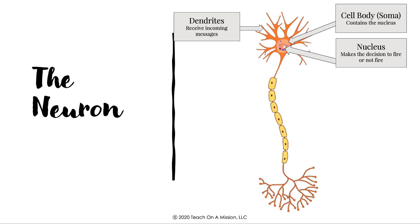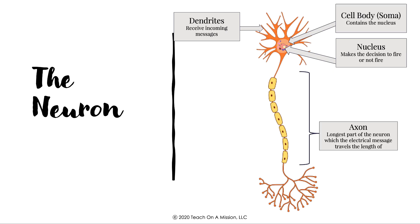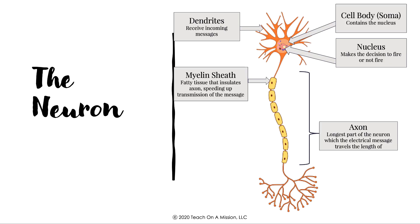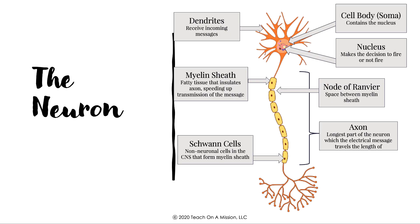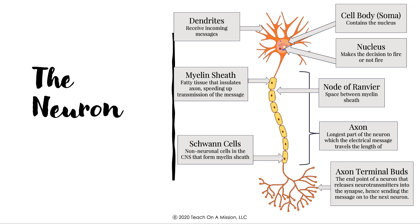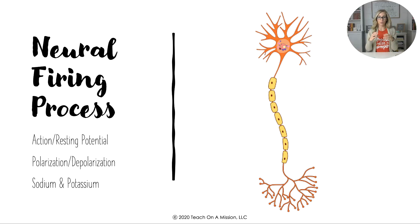Dendrites receive the message; it goes to the cell body or soma. The nucleus decides to fire or not. If it does, the signal travels the length of the axon — the longest part — which is insulated by the myelin sheath, a fatty tissue that speeds up the message. The points with no myelin between the sheath are called nodes of Ranvier. Schwann cells are the non-neuronal cells that produce myelin. At the very end are the axon terminal buds that release neurotransmitters across the synapse.